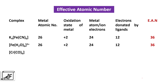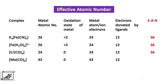The next example is Cr(CO)6, where CO is the carbonyl ligand, a neutral ligand. The metal atomic number is 24, the oxidation state is 0, so total electrons are 24. Each carbonyl ligand donates a pair of electrons — 6 carbonyl ligands donate 12 electrons — and the effective atomic number is 36. The next example is Mo(CO)6: molybdenum's atomic number is 42, oxidation state is 0, total electrons associated with the metal is 42. The 6 carbonyl ligands donate 12 electrons and the effective atomic number is 54.